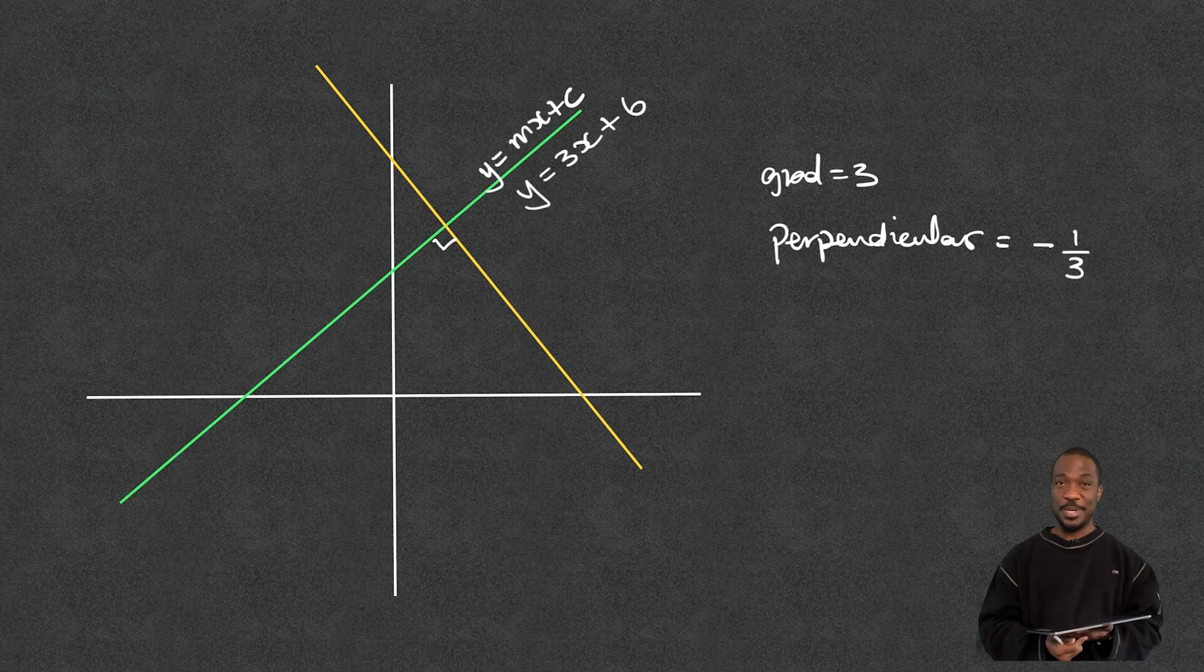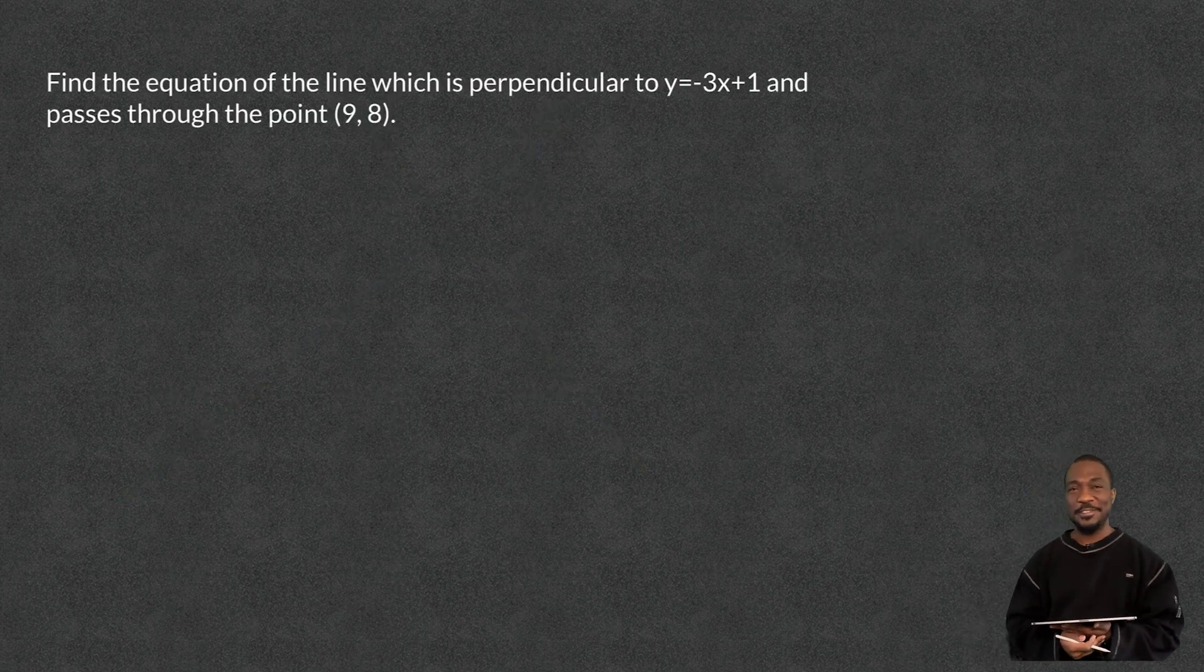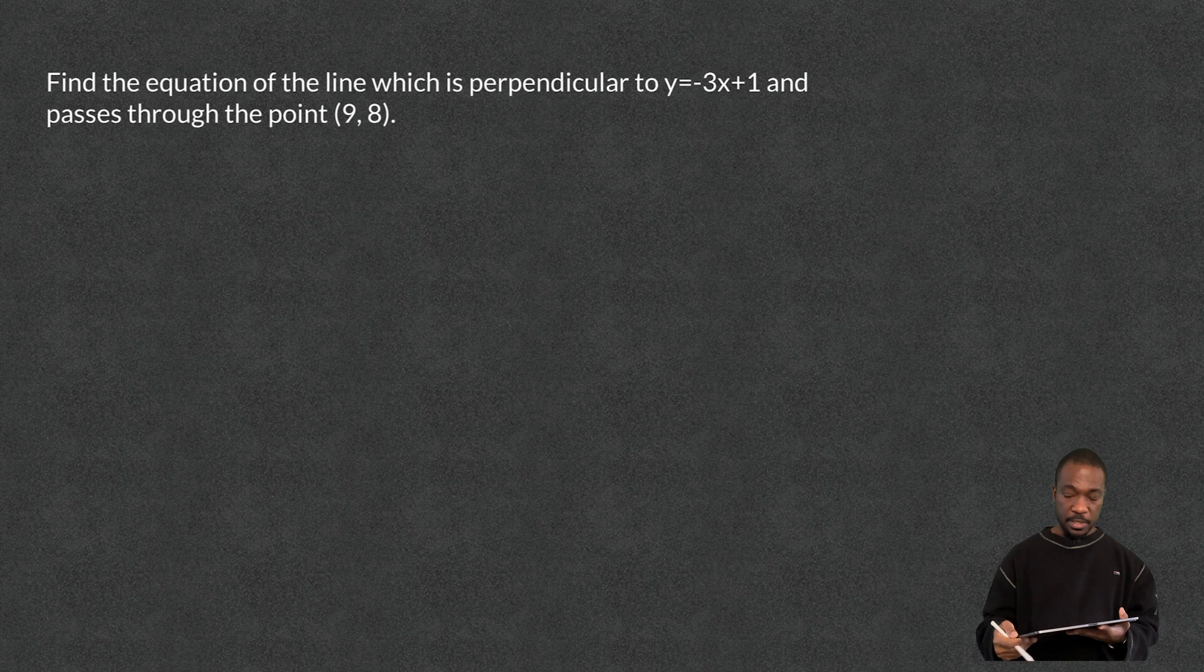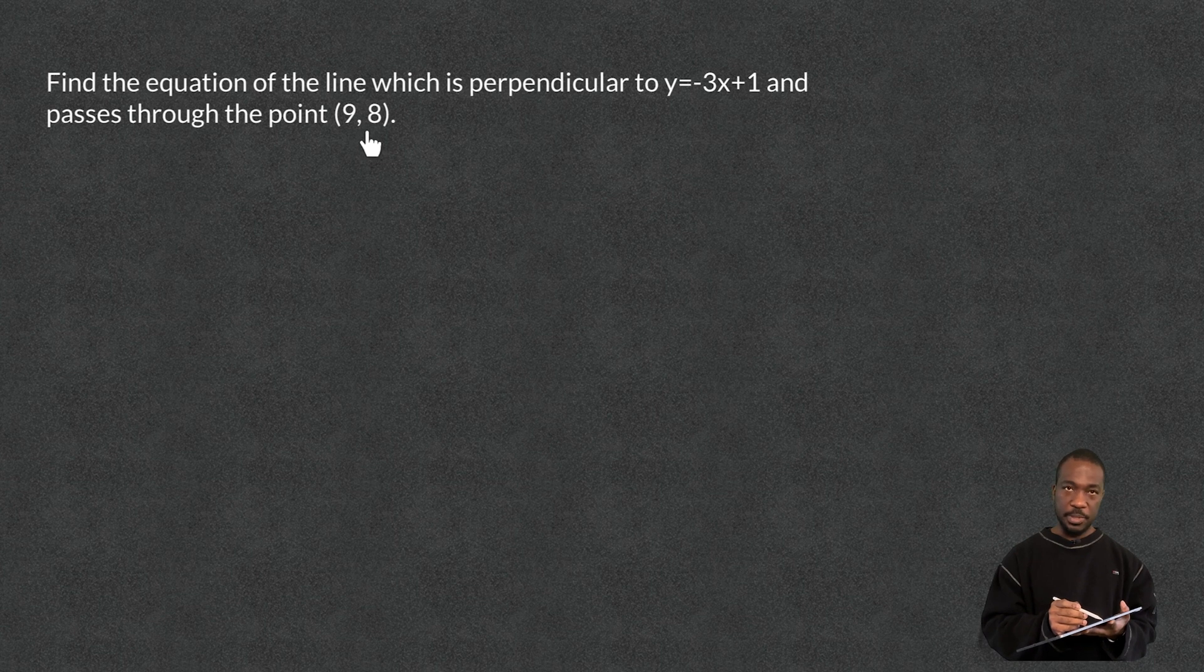Now we can go work out a couple of questions. Well, I do beg your pardon, not a couple of questions, one question, because this is a very quick video. So find the equation of the line which is perpendicular to this line and goes through this pair of coordinates here.